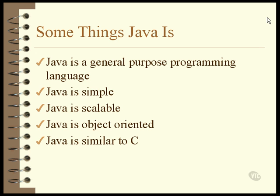Java was based on C. That is, the syntax and general structure of C was used as the basis for the design of Java. The overall structure is different because of the objects, but almost every executable statement in Java could be included in a C program and would compile and run just fine.